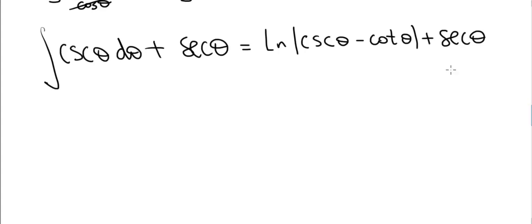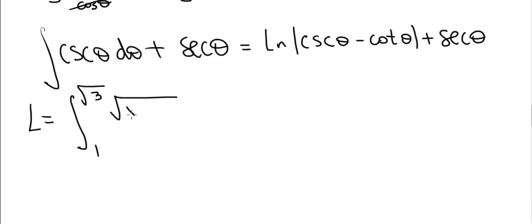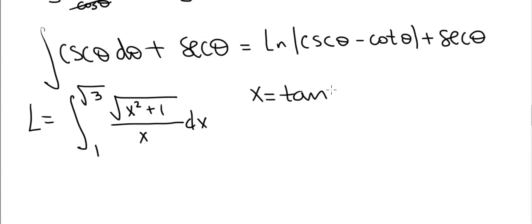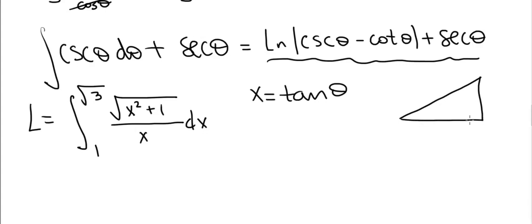Now we return to the original problem. The length of the curve was the integral from 1 to √3 of √(x² + 1) / x dx. After making the substitution x = tan(θ), we arrived at this antiderivative. We now need to express it as a function of x rather than θ. Since tan(θ) = x, we draw a right triangle with angle θ, opposite side x, and adjacent side 1, giving hypotenuse √(x² + 1).